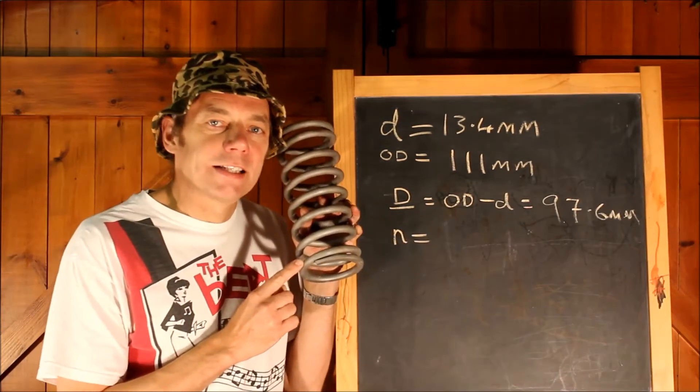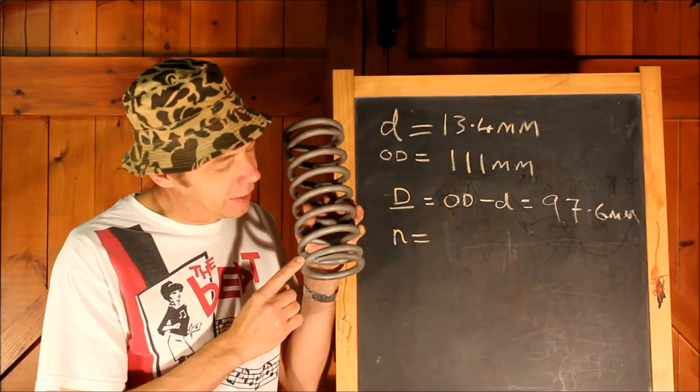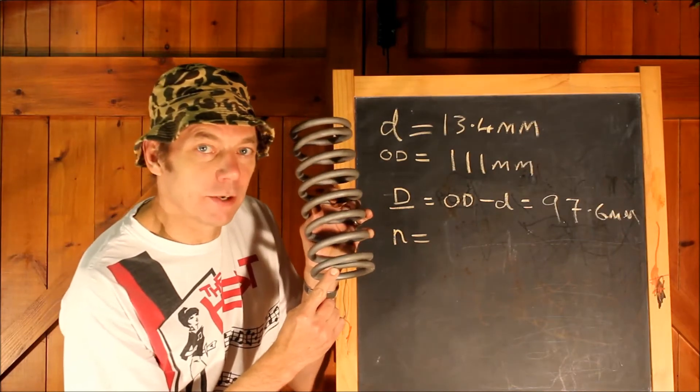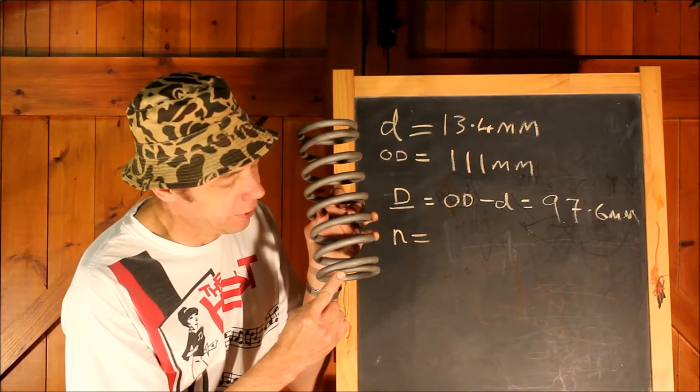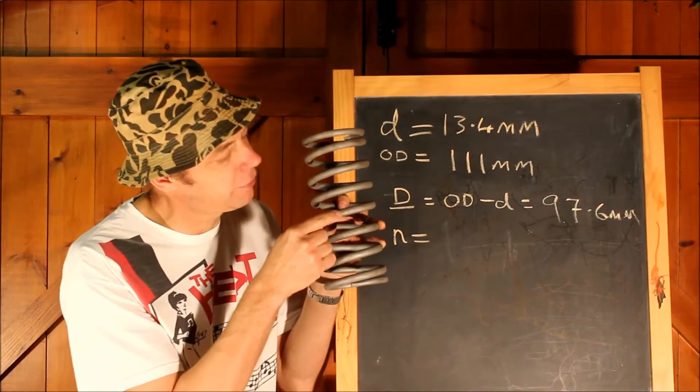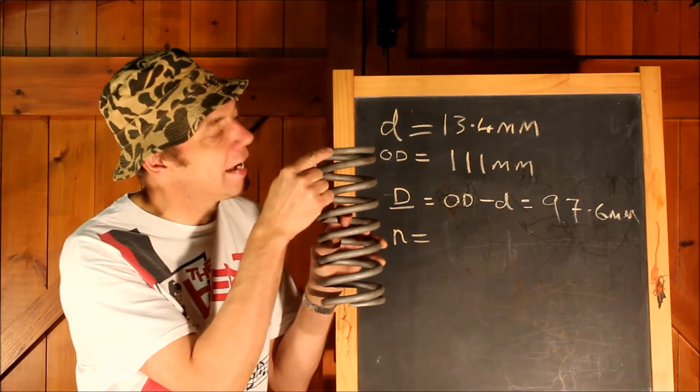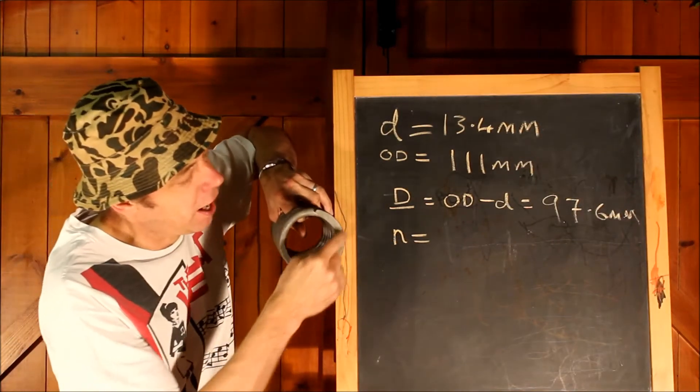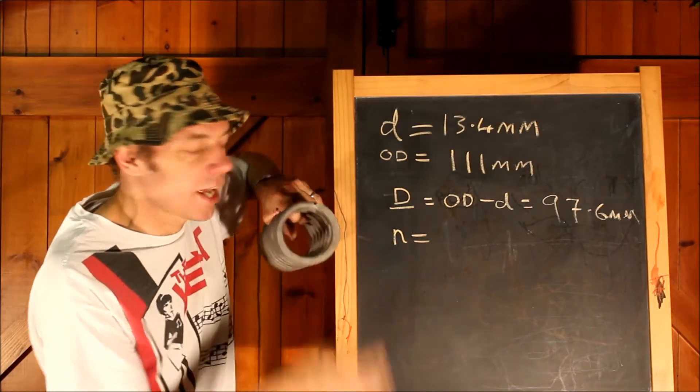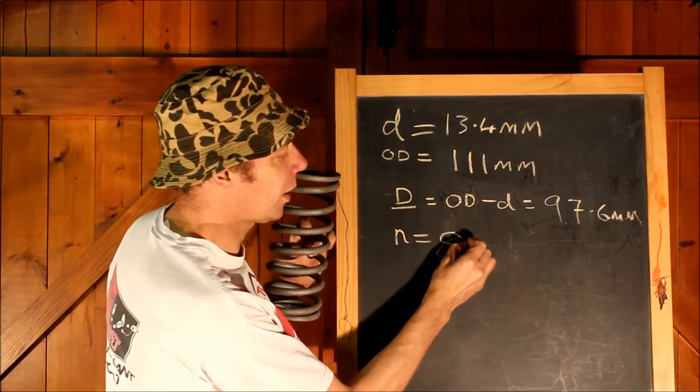Then we need to work out how many active coils of wire we've got in the spring. So starting at the bottom, count the number of coils as you go upwards. Starting at the bottom we've got 1, 2, 3, 4, 5, 6, 7, 8, and then if you look on the top there's another half a coil of wire to finish it off. So there's a total of 8 and a half coils of wire.